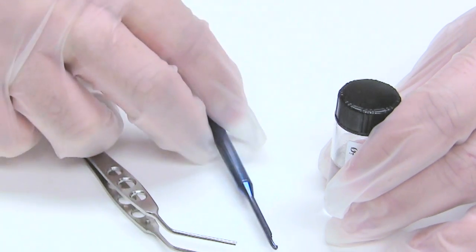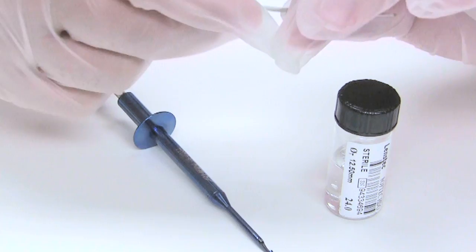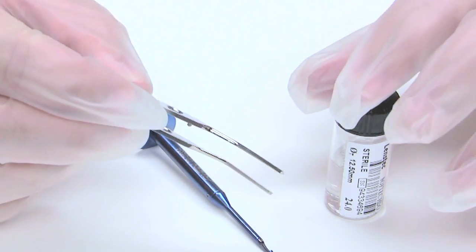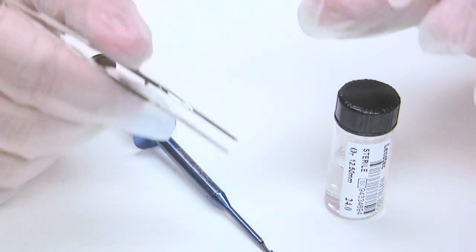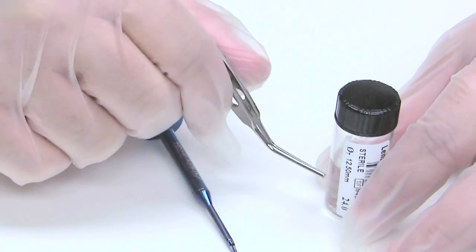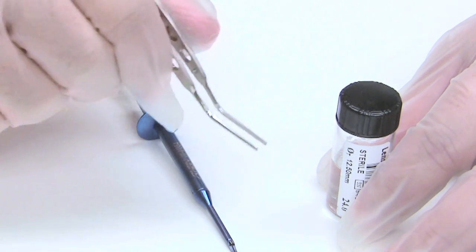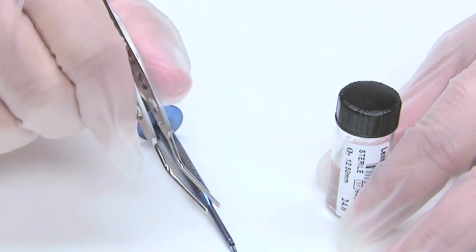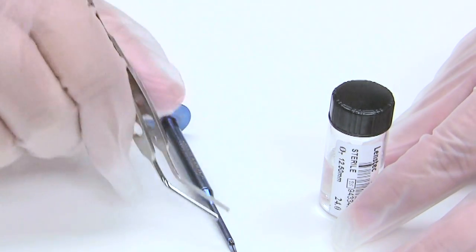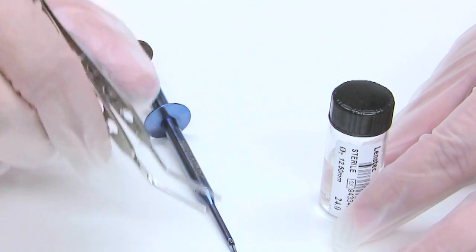And to do that we're going to use the Rhine 50 injector cartridge loading forceps to help us. Normally these forceps are used to pull the lens out of the bottle and put it in the injector and tap it forward to inject into the lens, but today we're going to use it to just grab the lens out and demonstrate the cutter cutting a lens.